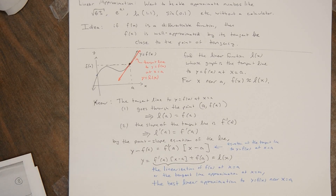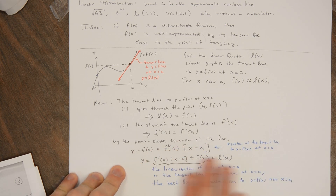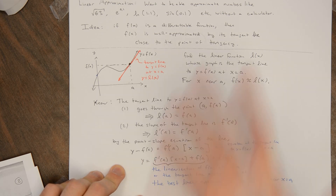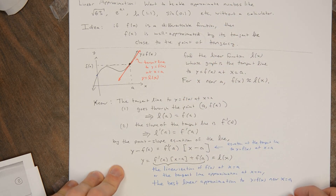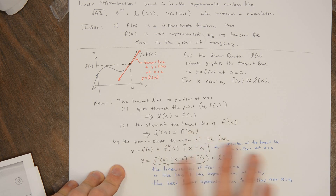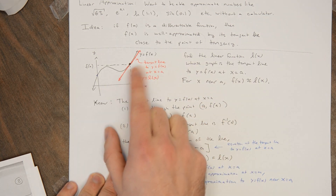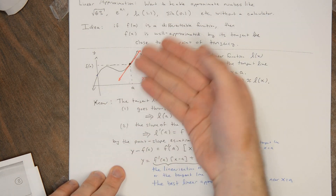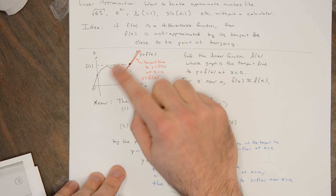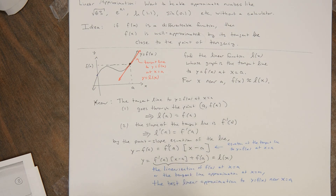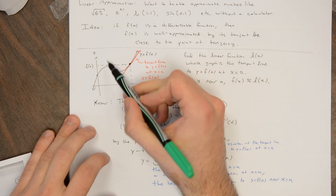We've learned about the tangent line approximation to a function — that this is the best linear approximation to a function. But it's natural to ask: why should I stop at linear when we know so much about quadratic functions? A linear function is a degree 1 polynomial. Why not take the best degree 2 polynomial approximation? A line can only be close to a curve for so long because the curve is curved and the line is straight. How close could I approximate my function if I were able to use a quadratic?